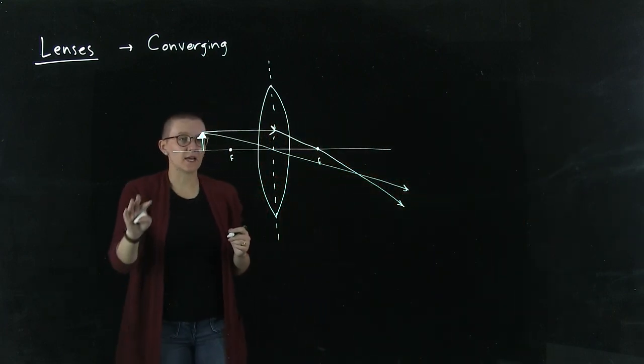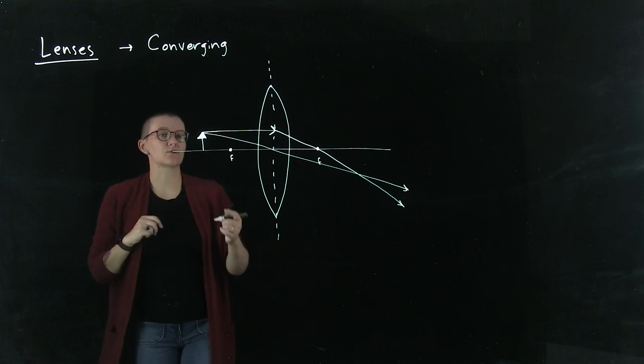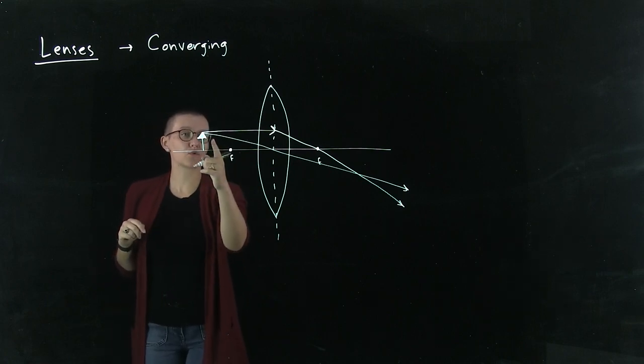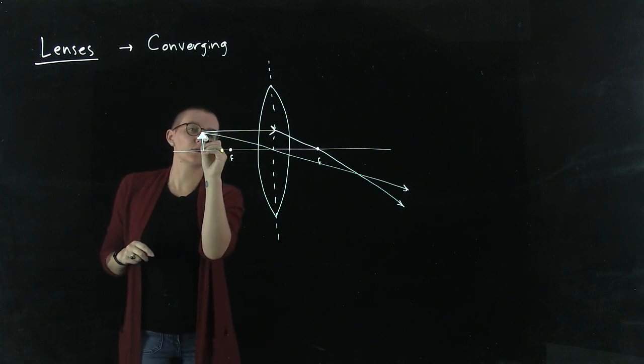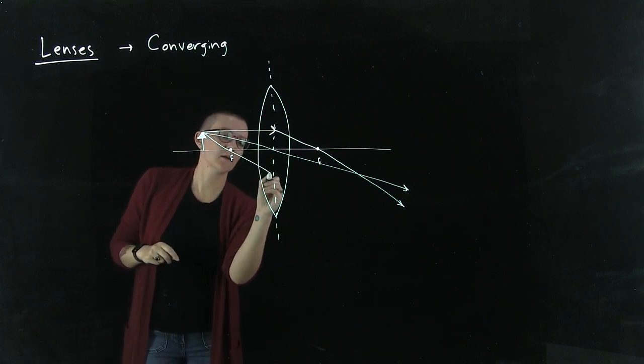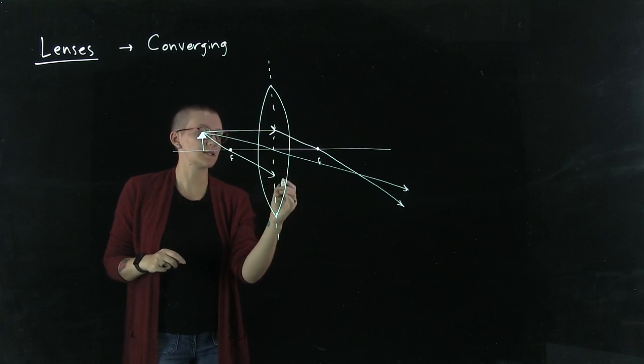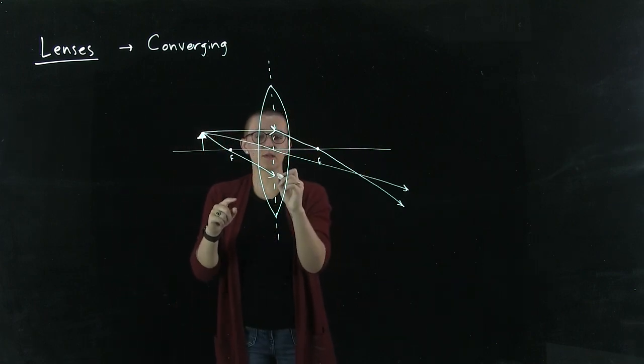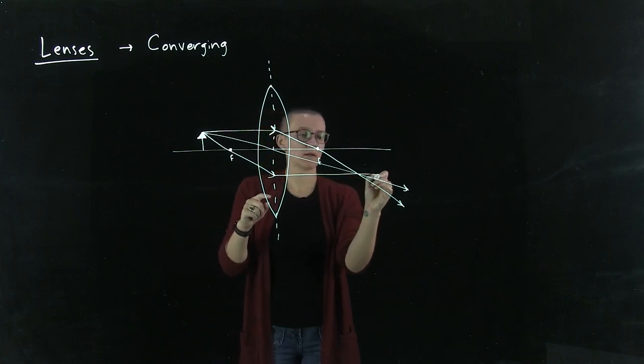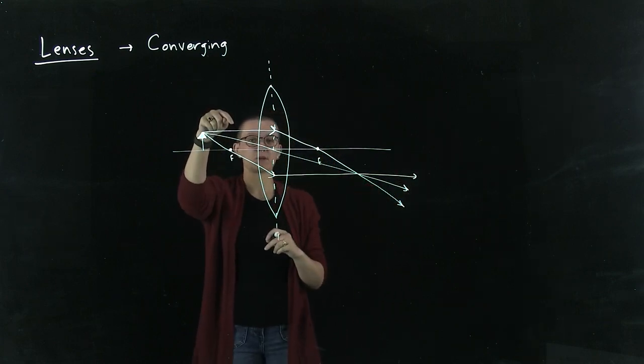Now our final light ray that we can draw is from the tip of the arrow through the focal point on this side of the lens. This will go through the focal point, hit the lens, and then come out the opposite side parallel to the optical axis. So it's just like this first ray we drew, just sort of opposite.